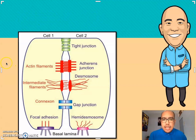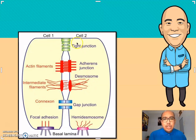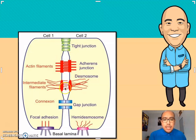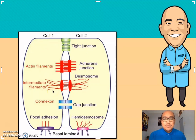This is the image of the cell — we have the first cell and the second cell. On the side, we have the tight junctions, the adhering junctions, and the gap junctions. This is very important for the interconnection between two cells.